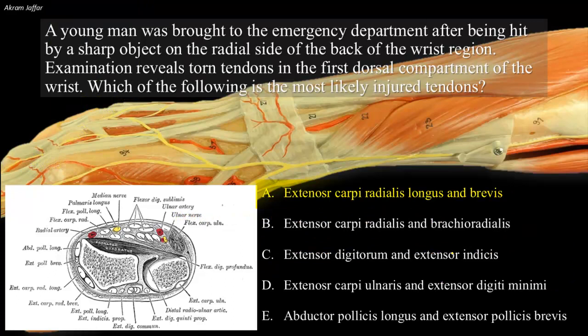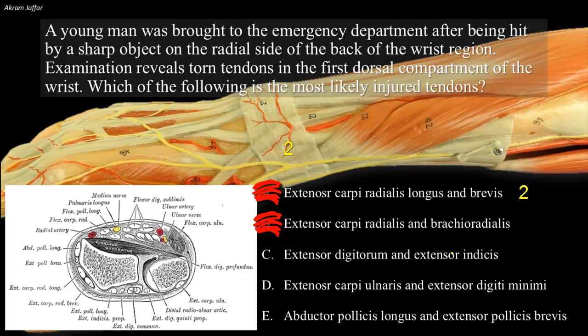Returning to the options: extensor carpi radialis longus and brevis pass in the second compartment, not the first. Regarding option B, brachioradialis does not extend deep to the extensor retinaculum — it is attached at the base of the radial styloid process proximal to the extensor retinaculum and does not occupy any compartment deep to it.